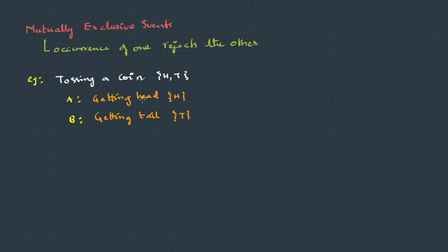Let's say we get head. It also means that it cannot be tail or if it's tail, it cannot be head, which means that if this happens, this will not happen.